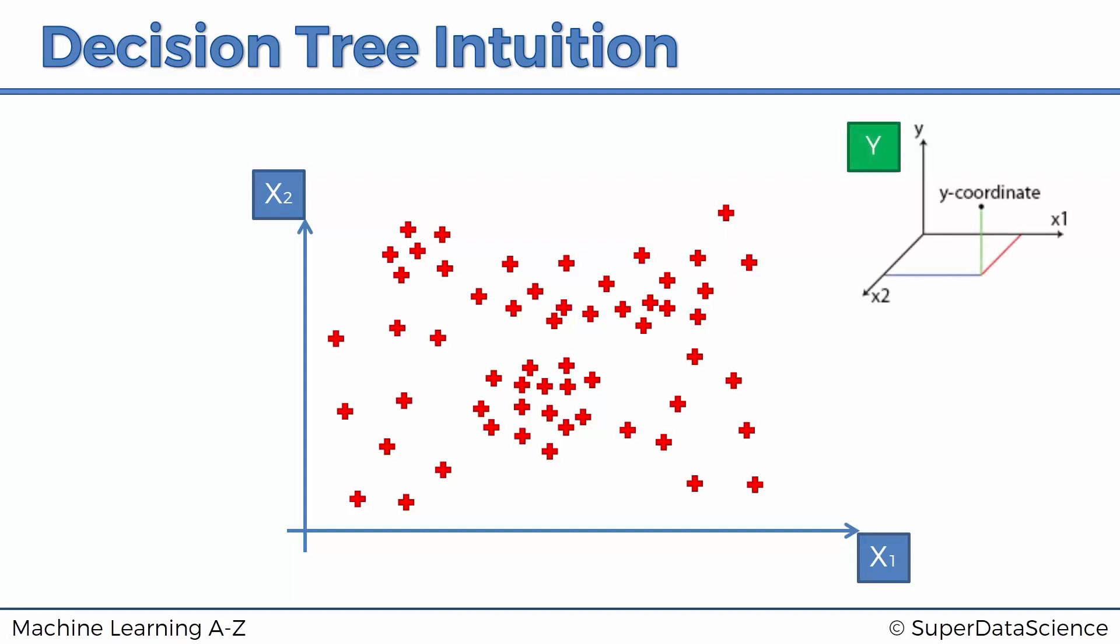If I add the third dimension, it would look something like that. But once again, we can't see y right now. The interesting thing is that we don't actually need to see y because we need to work with this scatterplot first for a little bit to build our decision tree, and then once we've built it, we'll return to y.